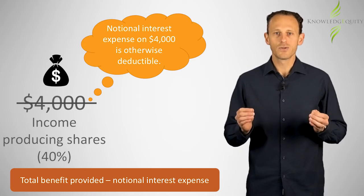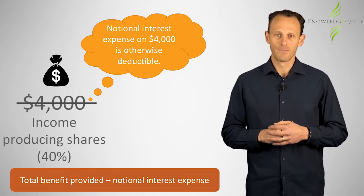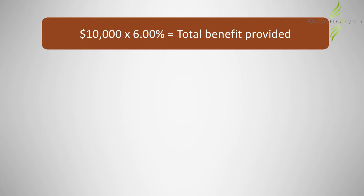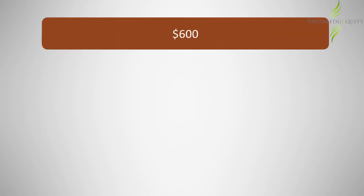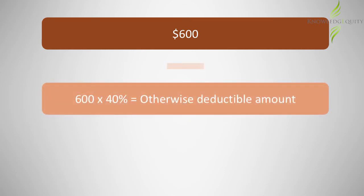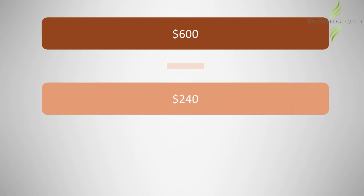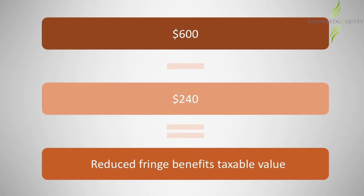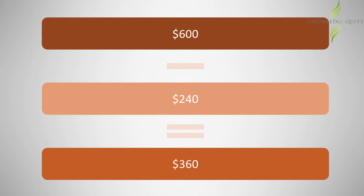Assume that the statutory interest rate was 6%. The total benefit provided on the $10,000 loan would therefore be $600. As 40% of the loan was used for income-producing purposes, the interest amount of $240 is deducted, leaving a fringe benefit's taxable value of $360.